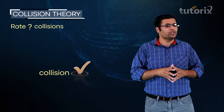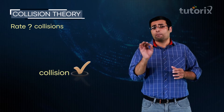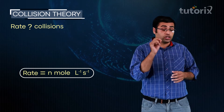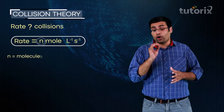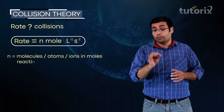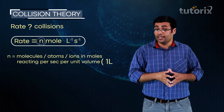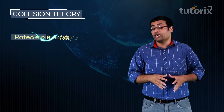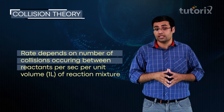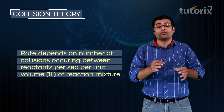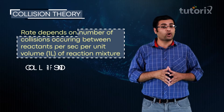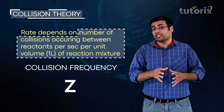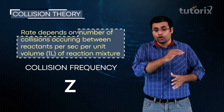How exactly does rate depend upon collisions? To answer this, consider a rate value with units of N moles per liter per second. These units tell us that N is the number of molecules, atoms, or ions in moles reacting per second per unit volume equal to 1 liter. This gives a hint: rate actually depends upon the number of collisions occurring between reactants per second per unit volume of the reaction mixture. These collisions are called collision frequency, denoted by the letter Z.